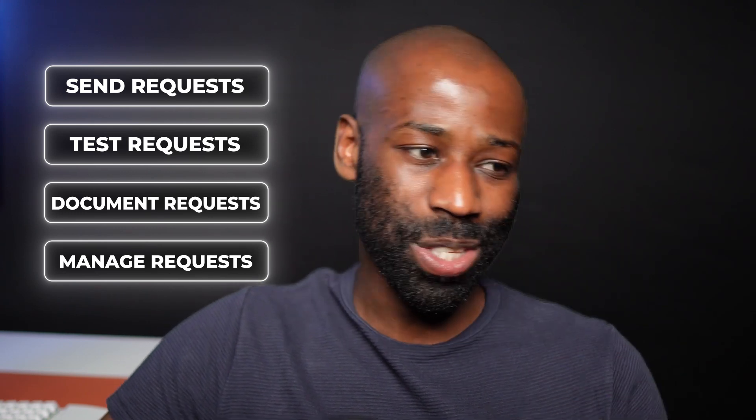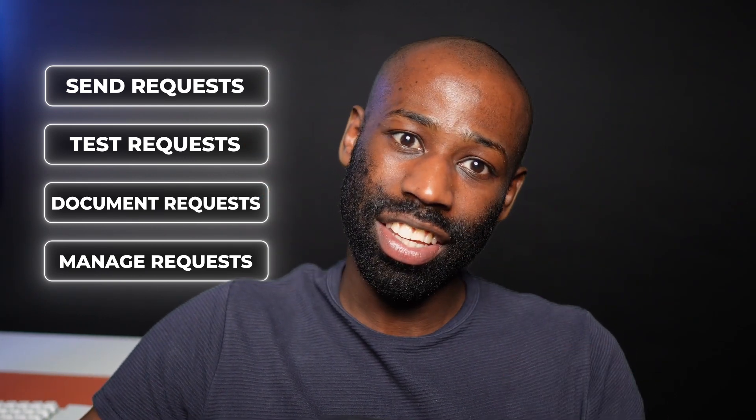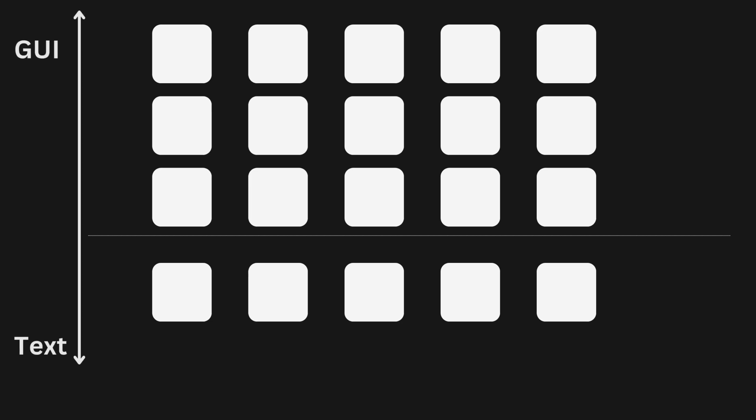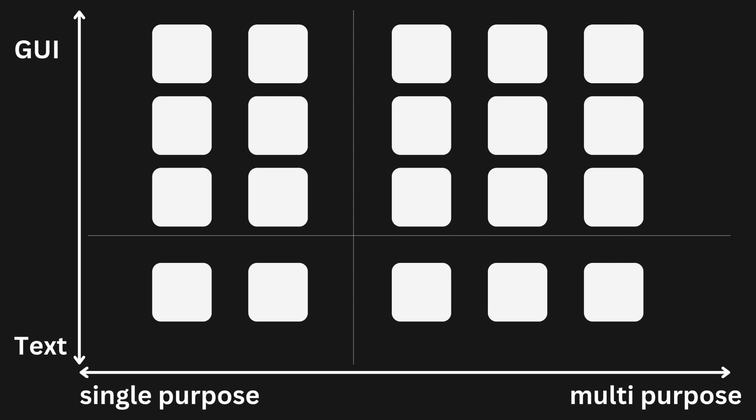Even with these criteria, it will be absolutely impossible to choose the best overall — it's like trying to decide who is the best athlete between LeBron James and Usain Bolt. So just like in sports, we can categorize API clients. We can split them into two major groups: graphical user interface and text-based or CLI API clients. We can go further and distinguish between multi-purpose and single-purpose clients, giving us four categories.